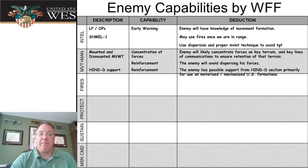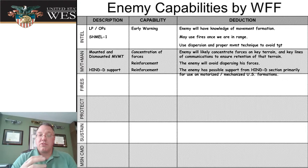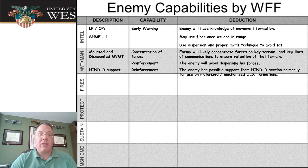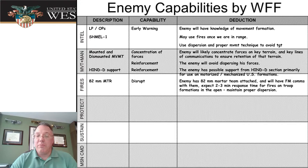For movement and maneuver: they've got mounted and dismounted movement forces and Hind-D helicopter support. That capability gives them the ability to concentrate forces and get reinforcements, meaning they're likely to concentrate on key terrain they want to retain and avoid dispersing their forces. The Hind-D gives them possible air support, but we think that's primarily going to be focused on motorized and mechanized formations. If we're dismounted infantry, we're kind of low on the priority list for the Hind-D unless we're the biggest thing in the area.